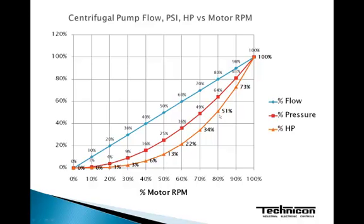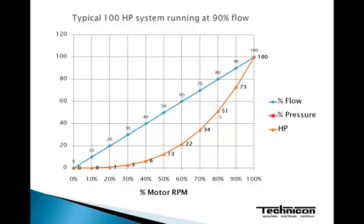Or if we back this down to 80%, we would have 51% of the horsepower required. Looking at actual horsepower, let's say we had a 100 horsepower motor and pump system running at full flow or full RPM — 100% — then we would require 100 horsepower. But if we back that flow down to 90%, then we would require only 73 horsepower. And if we take it down another 20% to 80% flow or RPM, we reduce this by a whopping 49%, so we only require 51 horsepower at that point.